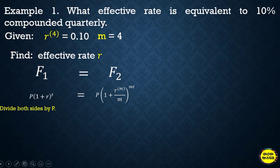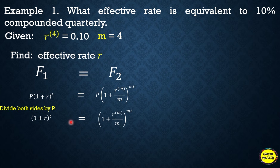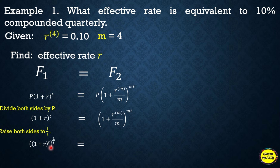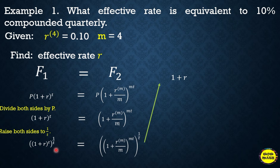We divide both sides by P, leaving (1 + r)^t = (1 + r_m/m)^(mt). Then to remove the exponent t, we raise both sides by the reciprocal 1/t. Multiplying t by 1/t gives 1, leaving (1 + r) on the left. On the right side only m remains.